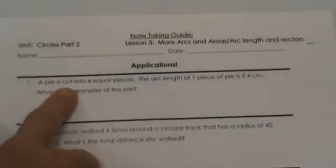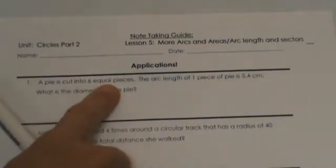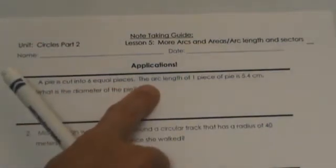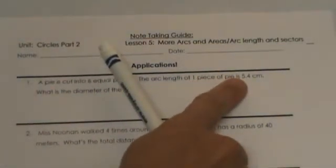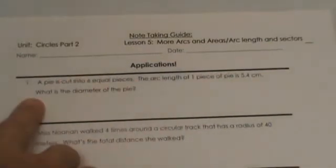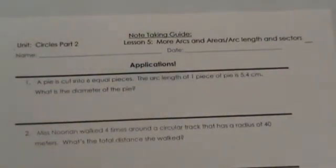A pie is cut into 6 equal pieces. The arc length of one piece of pie is 5.4 cm. What is the diameter of the pie?